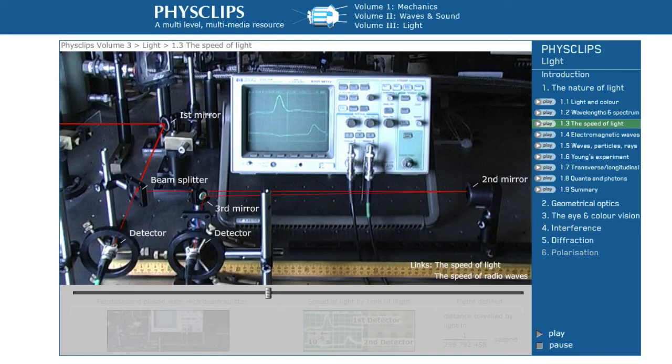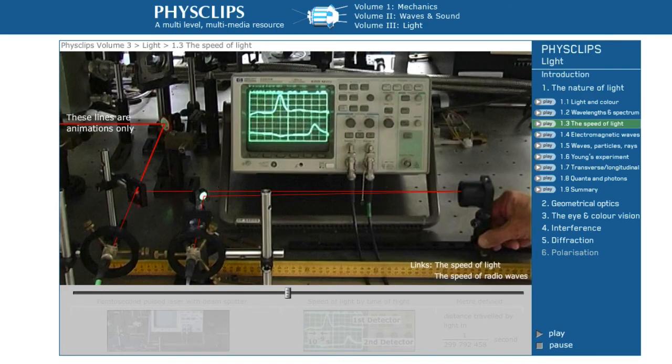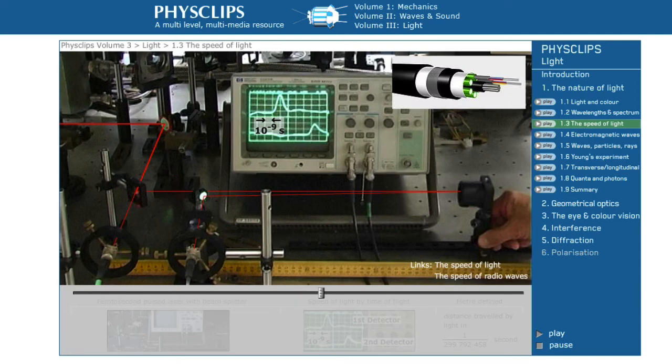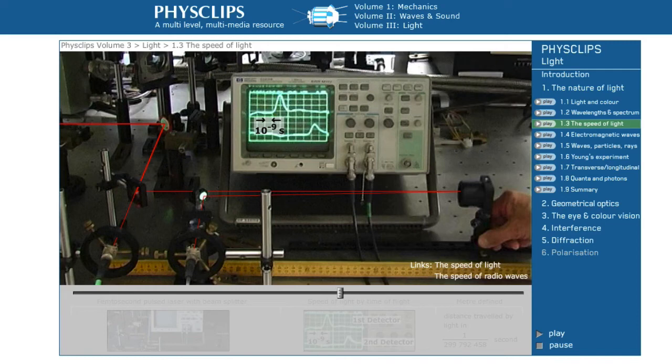The laser light looks continuous, but actually this laser emits millions of extremely short pulses every second. By the way, very short laser pulses are also used in fibre optics to transmit signals very rapidly. Here, the light pulses are received by the detectors and shown on the oscilloscope.